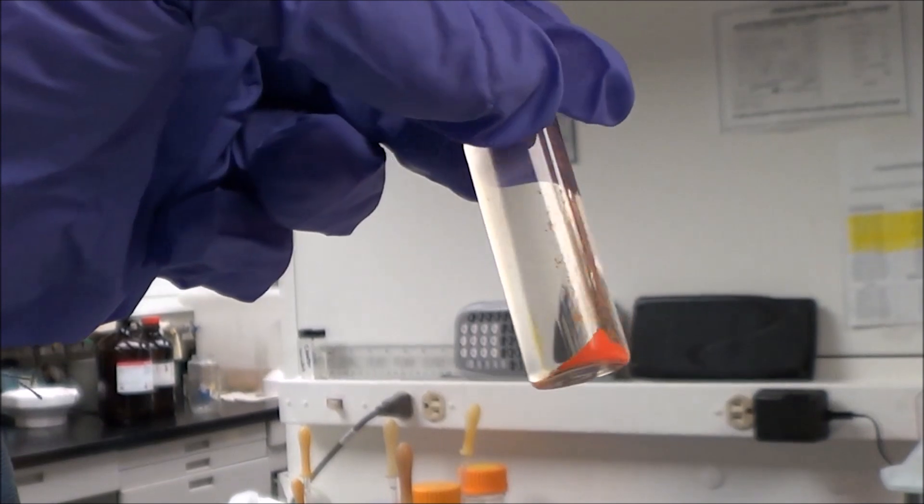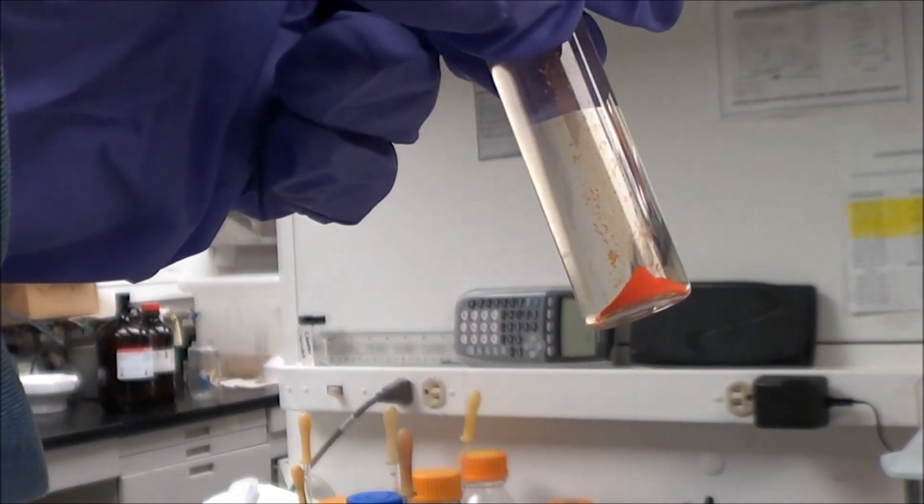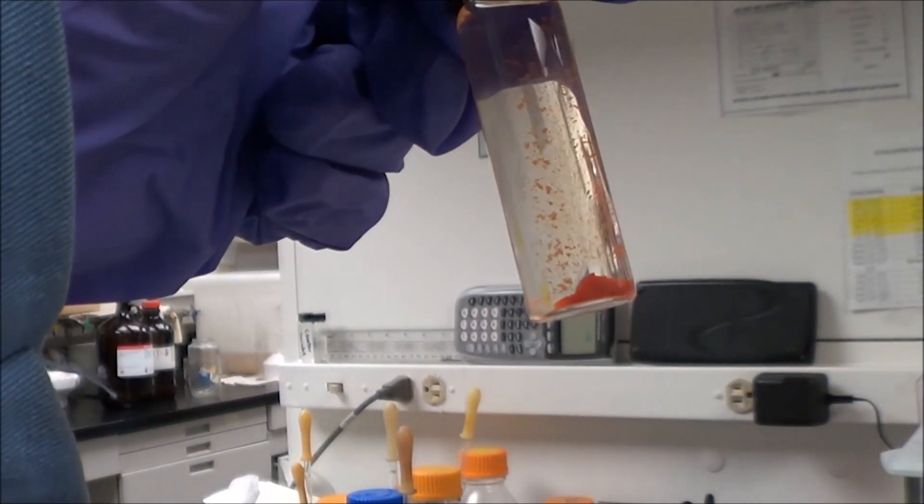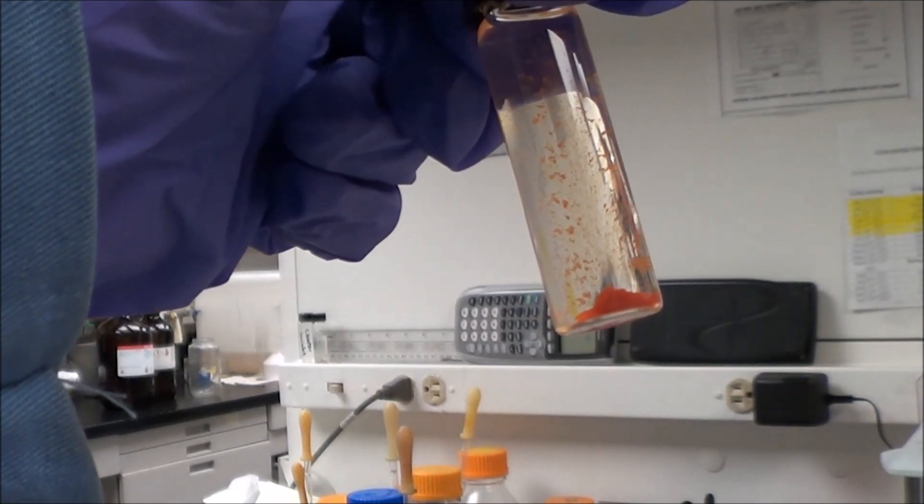Then what we do is we take the hexane with dots, add isopropanol and methanol or ethanol, centrifuge, and now you can see that we've got a clean precipitation.